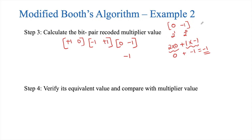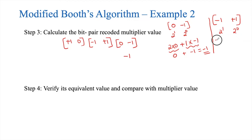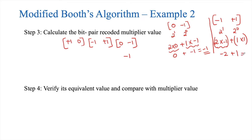For the second pair, minus 1 and plus 1: the weightages are 2 power 1 and 2 power 0. The value is 2 × (minus 1) + 1 × (plus 1) = minus 2 + 1 = minus 1. So the bit-pair recoded value of this pair is also minus 1.